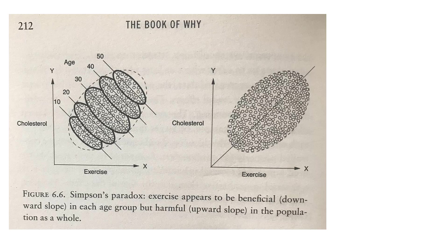In their example they're looking at the impact of exercise on cholesterol. What they show is that in each age bracket — 50 plus, 40 plus, 30 plus, 20 plus, 10 plus — exercise appears to have a beneficial effect, shown by the downward slope. In each of the different age categories, the more exercise people do the lower their cholesterol.